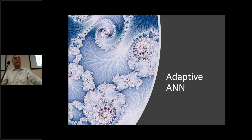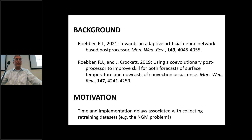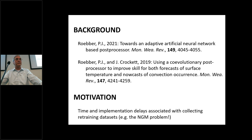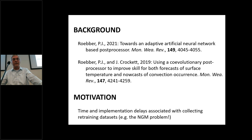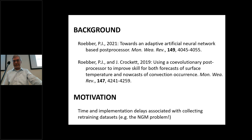This all led to thinking about adaptive approaches. With ecosystem dynamics you might expect something adaptive — after all, ecosystems are adaptive. I published a paper on the co-evolution work in 2019, and then the adaptive application in 2021. The motivation is the time delays in developing post-processing algorithms: it can be several years between when a new model or significant model upgrade happens and when post-processors are updated to reflect those improvements. If you can do this on an ongoing basis, that would be a big improvement.